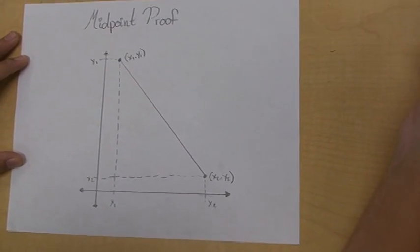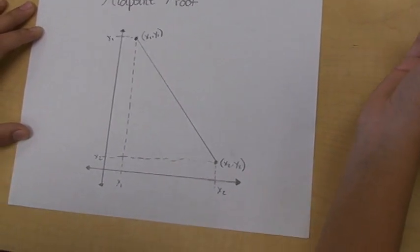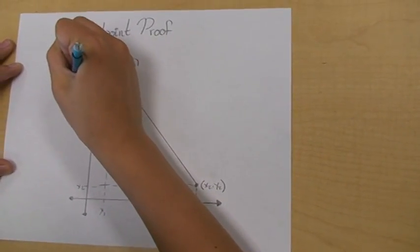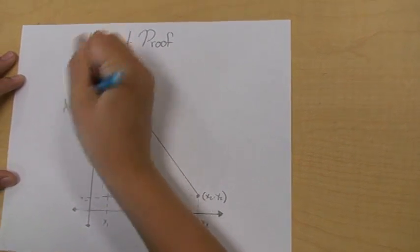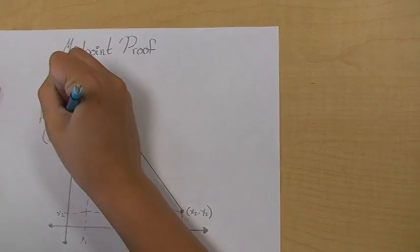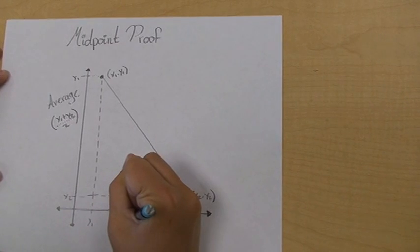Average is defined as adding the values and dividing by how many values there are. Since there are two values for each of these, we will add the two values and divide by two. Starting with the y-axis, we add each y component and divide by two: y1 plus y2 divided by two.